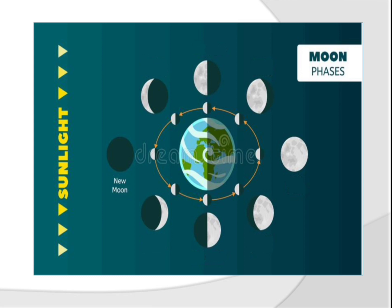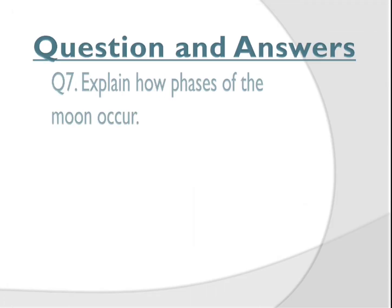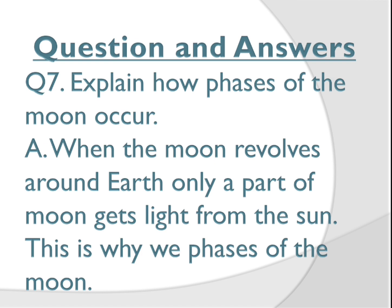So this is about our topic for today. I have given a few keywords in your daily schedule — please learn them, write them in your classwork, and underline them in your content book. If you find any other word difficult, you can include it in your keywords. Now, for your question answer: explain how phases of the moon occur. The moon revolves around the earth and only that part of the moon is visible where it gets light from the sun — that's why we have different phases of the moon. Write this answer in your classwork and please learn it, children.